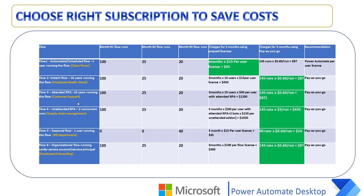Scenario three is customer support, where attended RPA is also used. With the same 10 users and the same 100, 25, and 20 runs over three months, the per user plan with attended RPA costs $40 per user per month. Over three months for 10 users, that's $1,200. With pay as you go, the cost is $87. Comparing these two, pay as you go is clearly the best recommendation.